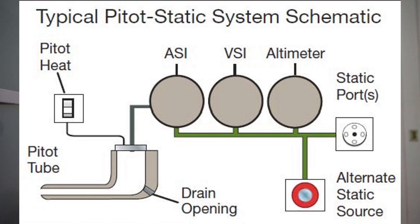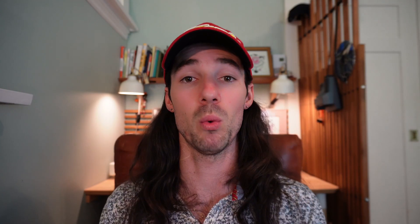Most errors in the pitot-static system are due to blockages, which can come in many forms: the pitot tube could be clogged, the drain hole in the back could be clogged, or the static ports could be clogged. Common blockages include insects, dirt, and ice. Water alone is less of a concern due to the drain hole, unless it freezes inside the pitot tube — that's when you'd turn the pitot heat on.